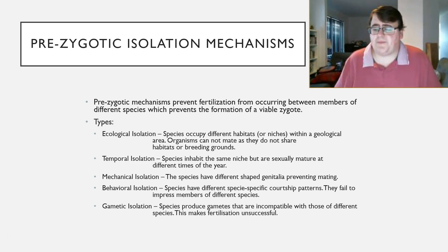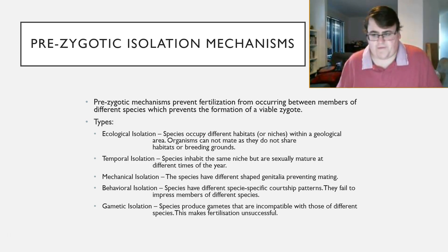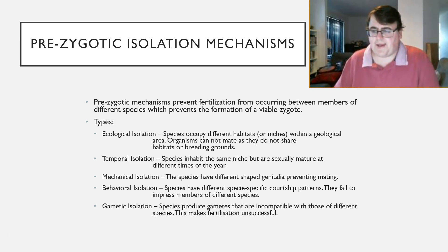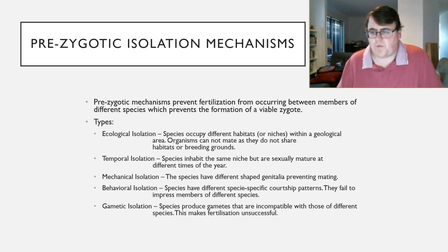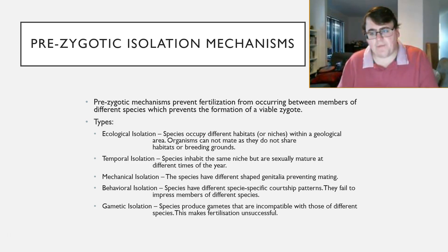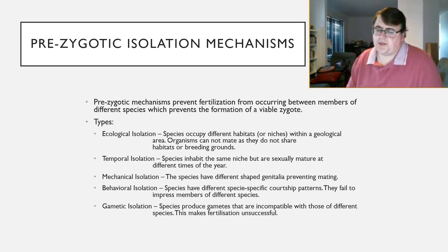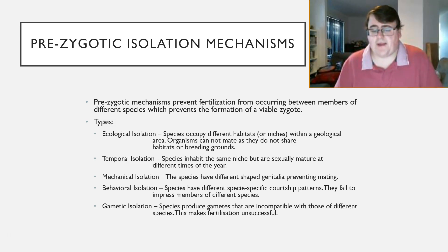Behavioral isolation: they might have different species-specific courtship patterns. For example, a pigeon does that weird mating dance where it fluffs all its tail feathers up. That courtship ritual is only going to work on other pigeons — and not even all the time on those. If a pigeon tries that mating ritual with a magpie, the magpie is completely uninterested. That's behavioral isolation. Finally, gametic isolation: they produce gametes that are incompatible across different species, so the sperm can never fertilize the egg.